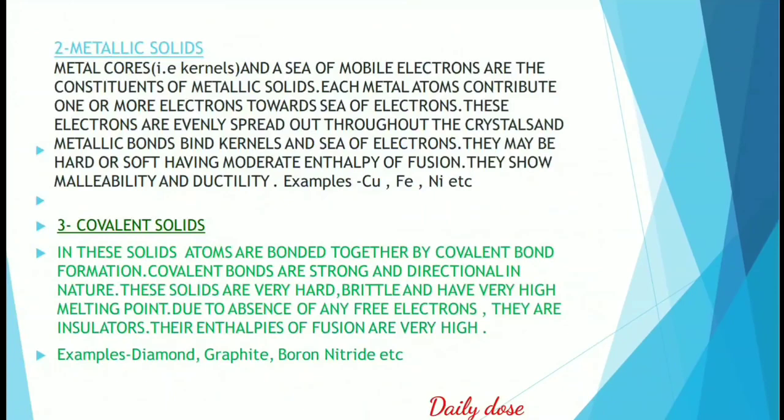The next type is metallic solids. As the name suggests, they are composed of metal atoms held together by metallic bonds. In metallic bonds, electrons form huge molecular orbitals that span across the whole solid. As a general principle, the more valence electrons there are, the stronger the metallic bonds, and therefore the higher the melting points.